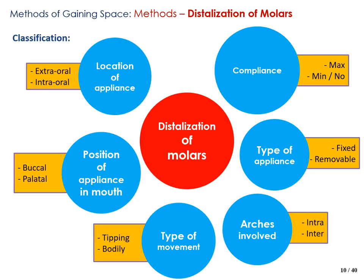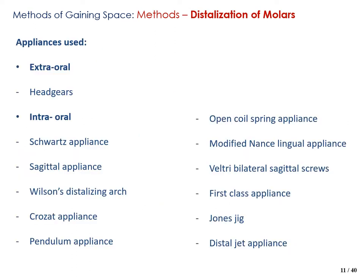Distalization appliances are classified by several criteria: location (extraoral or intraoral), position in the mouth (buccal or palatal), type of movement (tipping or bodily), compliance (maximum or minimum/no compliance required), type of appliance (fixed or removable), and the arch involved (intra-arch or inter-arch). Some of the appliances used are divided into extraoral and intraoral categories — you should aim to remember as many as possible to understand which category each belongs to.